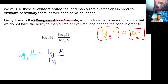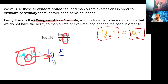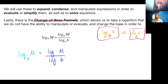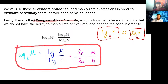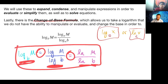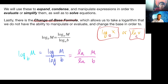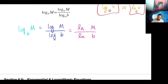This is called the change of base formula. You can change it to anything, but in reality what are the only two we want? Ten and e. So log_b(m) equals log(m)/log(b), or equivalently ln(m)/ln(b). These are all equivalent — whether you use this form or that form, you should get the same number out.